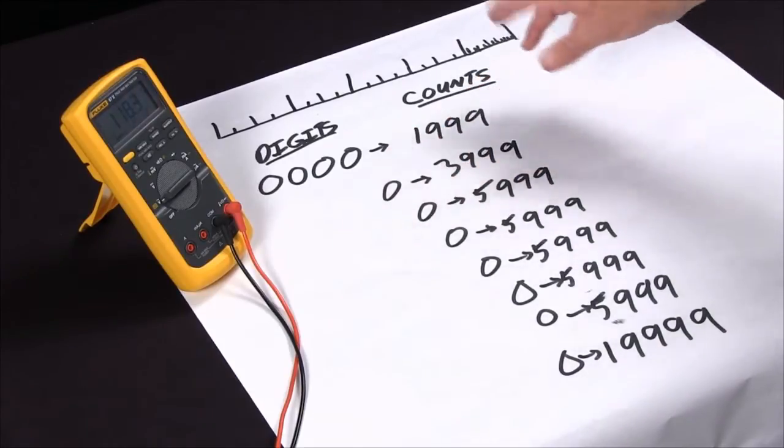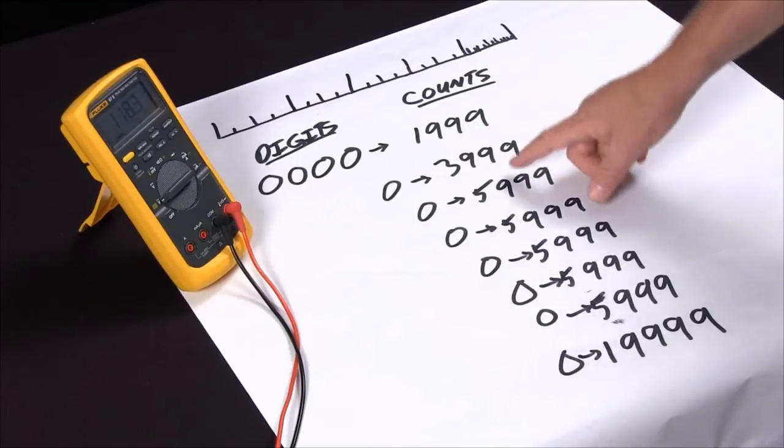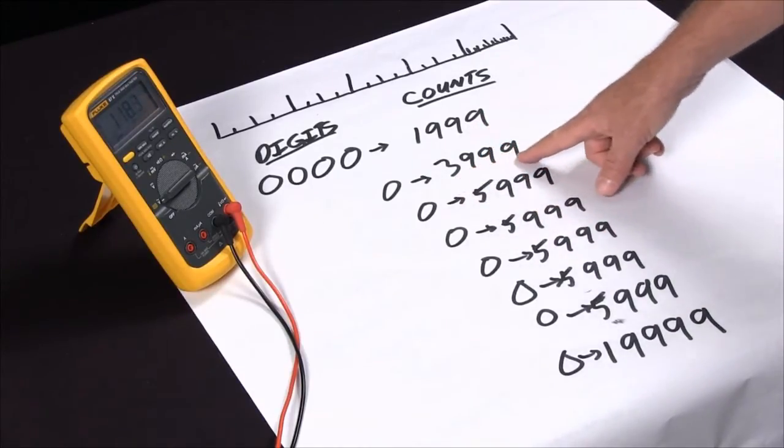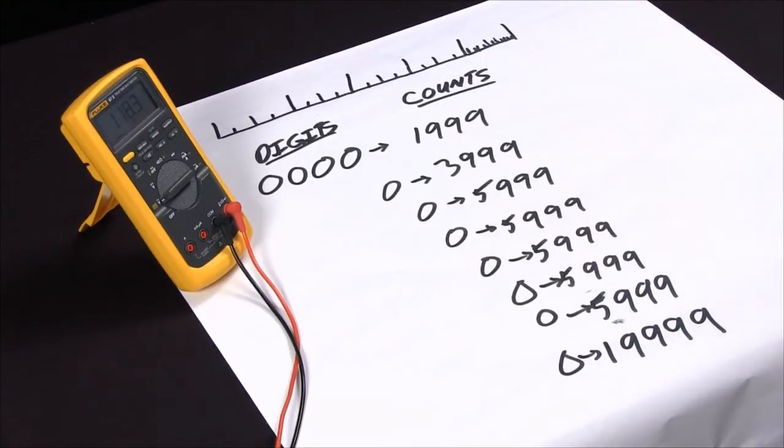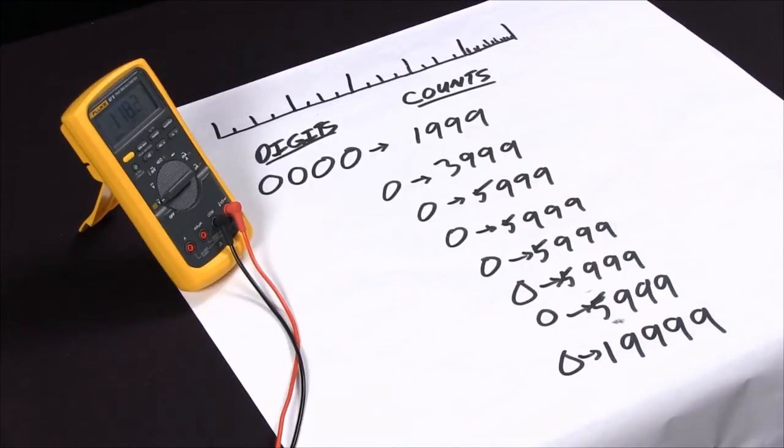So here we have a meter that is a 2,000 count multimeter. It counts from 0 to 1,999. This would be a 4,000 count multimeter, counting from 0 to 4,000. And then we recently upgraded all our Fluke meters to be 6,000 counts, which actually benefits you quite a bit.